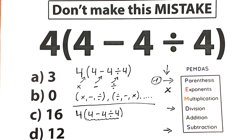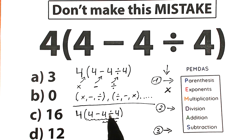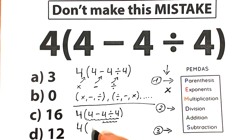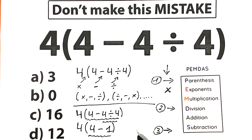As I said, higher position means higher priority. Division has the higher position compared to subtraction, so division has higher priority. Division is our second step and subtraction is our third step. Inside the parentheses: 4 minus 4 divided by 4 — we first do 4 divided by 4, which equals 1. We complete the division part, and now we complete the subtraction: 4 minus 1. Everyone can easily solve this.